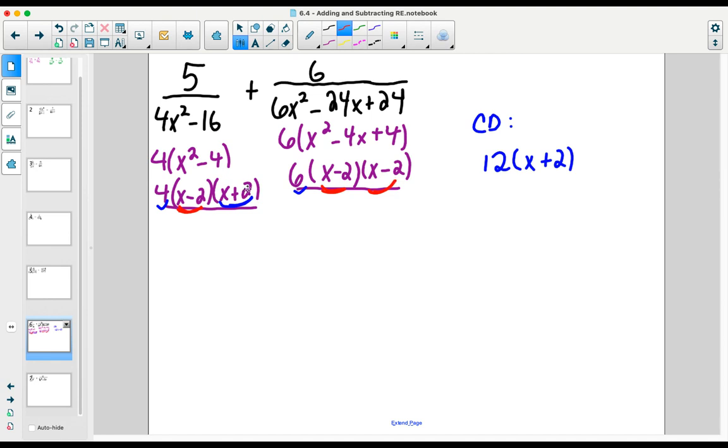So x plus two only appeared once, therefore we need it once. But x minus two appears once here and twice in that factorization. So when we write our common denominator, we're going to need two x minus twos.